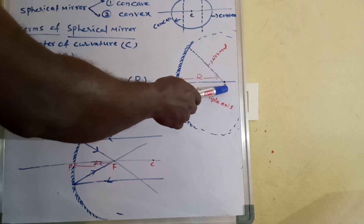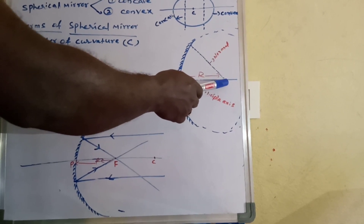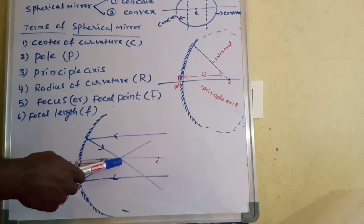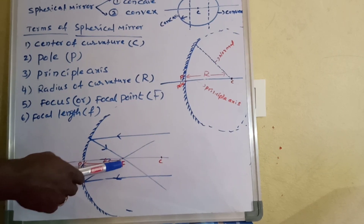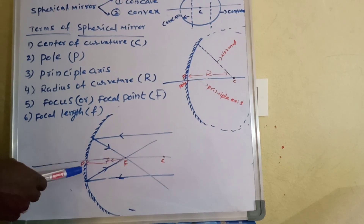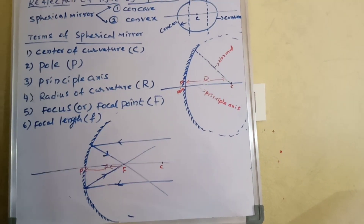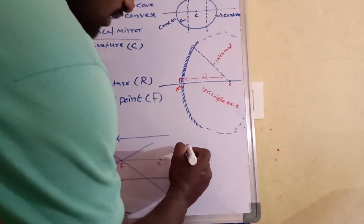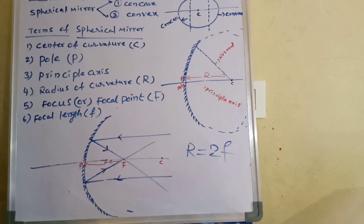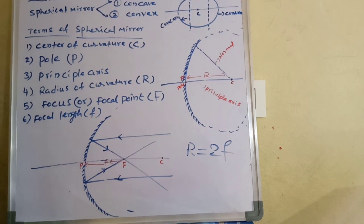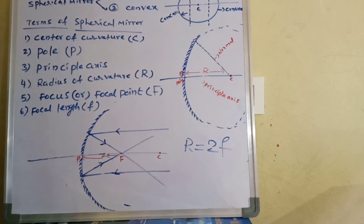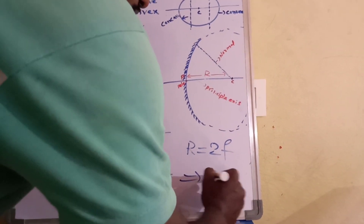The radius of curvature is the distance between the center of curvature and pole P. Here, the focal length f is the distance between the focal point and pole — that is F to P — while the radius of curvature is C to P. The relation between the radius of curvature and focal length is R equals 2F, meaning the radius of curvature is twice the focal length, so F equals R divided by 2.